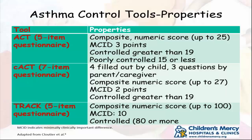The ACT is a five-item questionnaire — a composite numeric score that measures different domains of asthma control as defined by the guidelines. The minimal clinically important difference is three points. So if you go from 17 to 20, you've made a difference; if you go from 19 to 20, you're still in the controlled range but it may not reflect something you did. There is a subjective question in the ACT and C-ACT: 'How do you rate your asthma control?' From my experience, teenagers almost always rate it well.